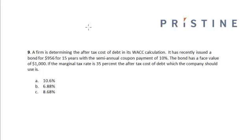A firm is determining the after-tax cost of debt in its WACC calculation. It has recently issued a bond for $956, for 15 years, with a semi-annual coupon payment of 10%. The bond has a face value of $1000, and the marginal tax rate is 35%. We need to find the after-tax cost of debt the company should use.